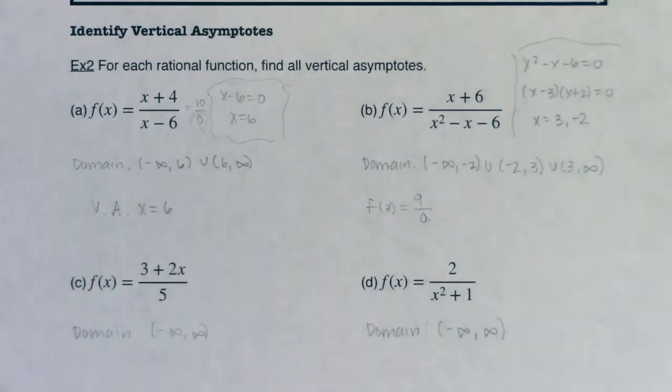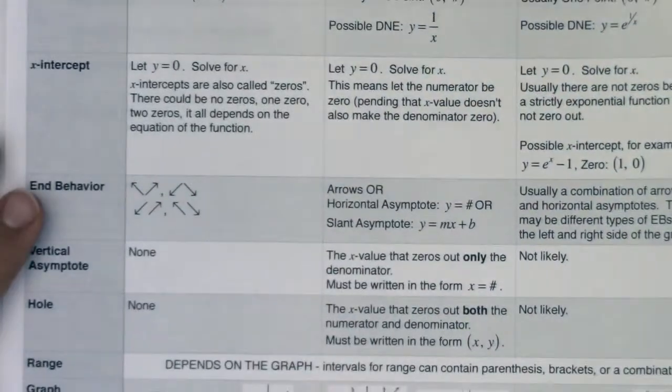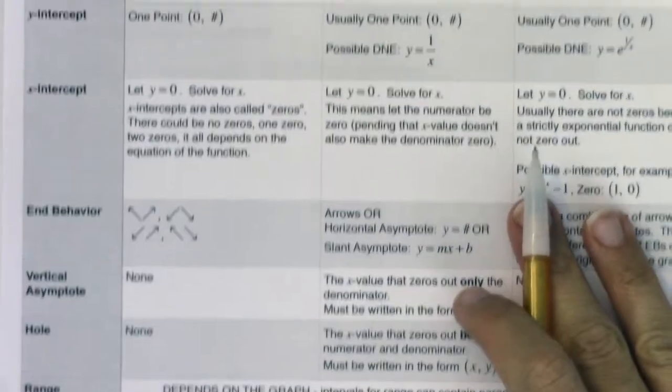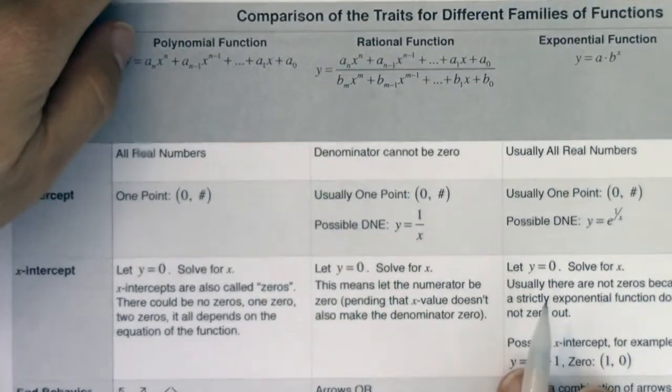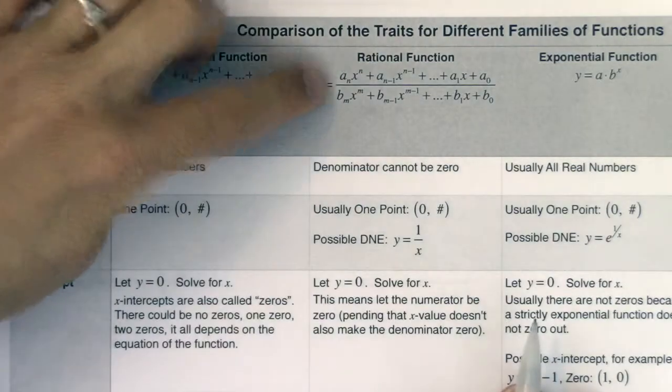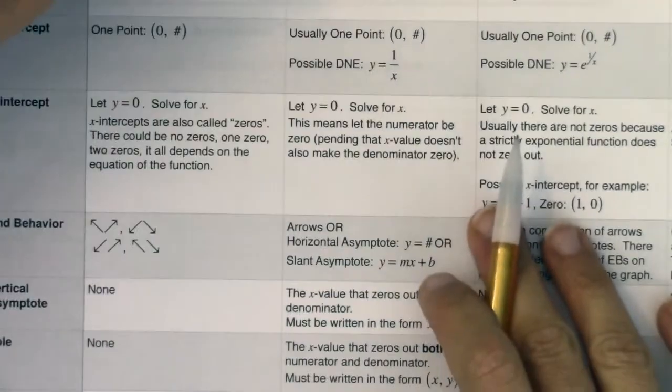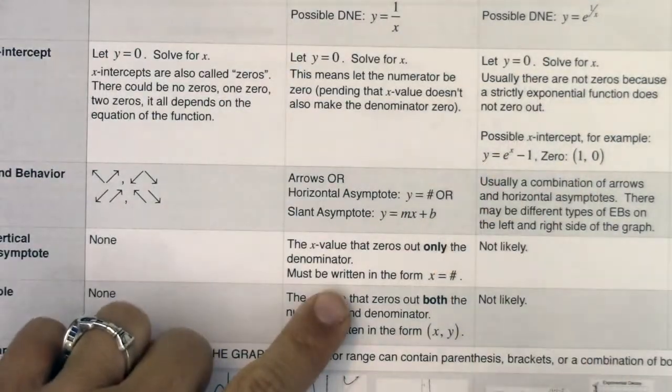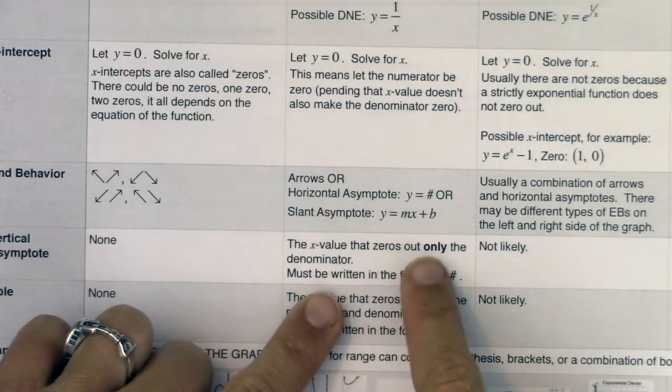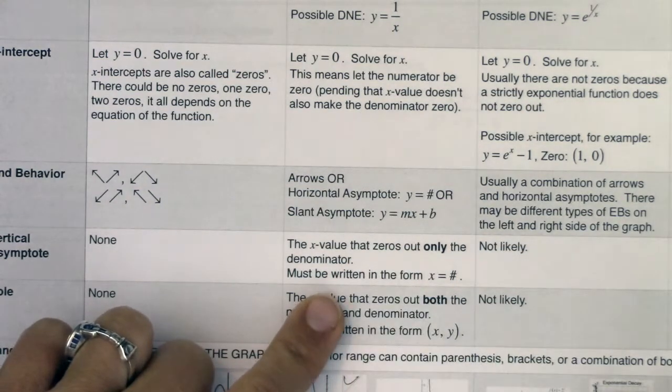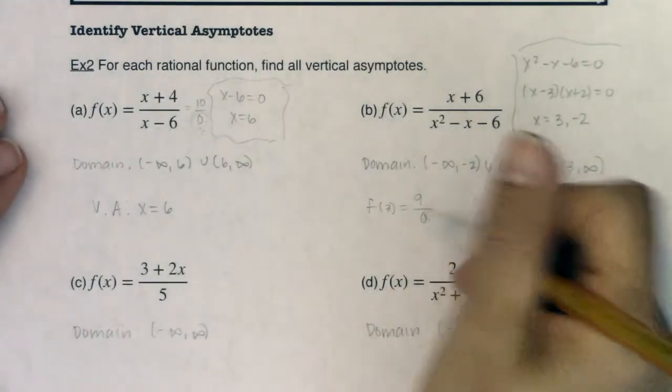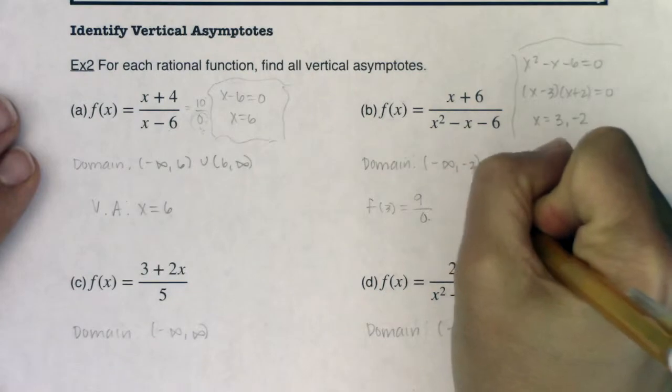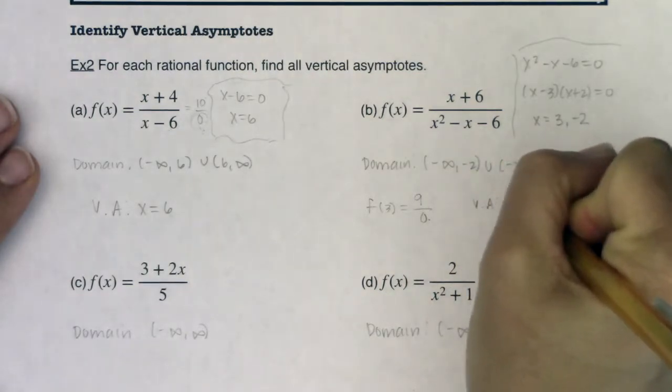And I'm going to reference back to our trait table again, because I really want to start making these connections. When I was in the rational functions column, when I'm talking about rational functions, and I go to the row that says vertical asymptotes, it says the x values that zero out only the denominator, and so if we take a look back at this example, only my denominator was zeroed out, so that means I have a vertical asymptote at x equaling three.